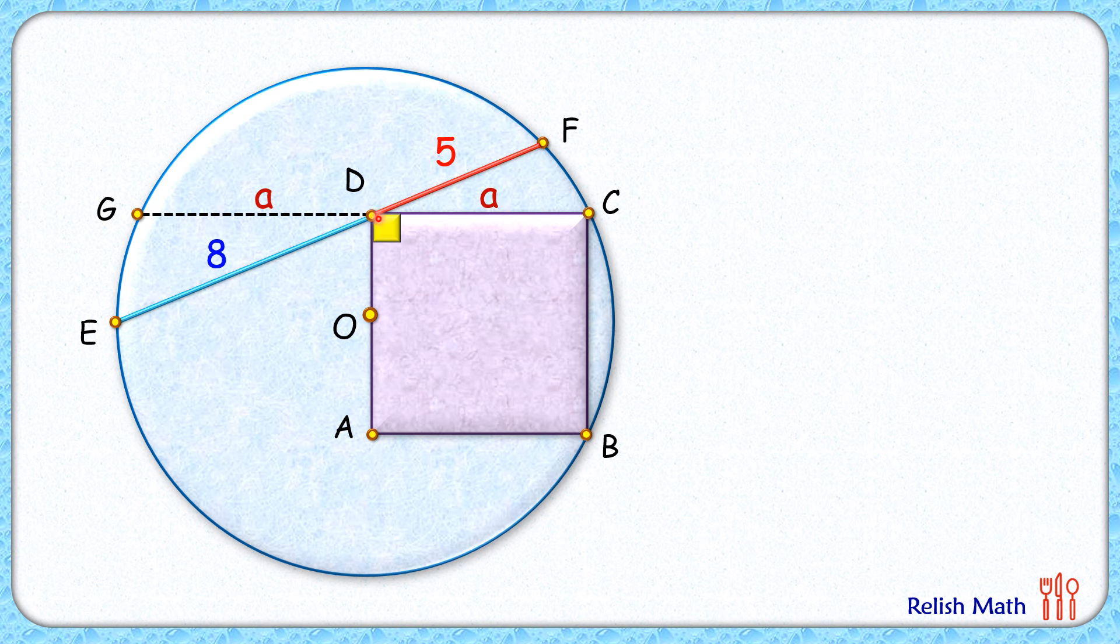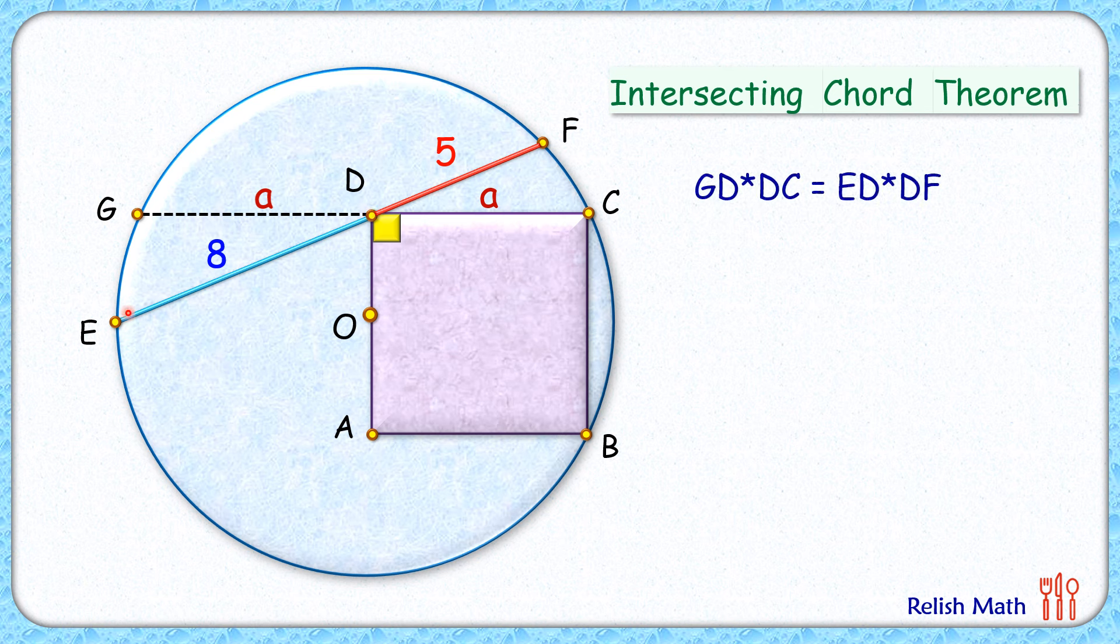Now in this circle we have two chords, EF and CG, which are intersecting at point D. So by power of point theorem or intersecting chord theorem we get GD times DC equals ED times DF. Putting the values here, GD and DC are a centimeters, ED and DF are 8 and 5.